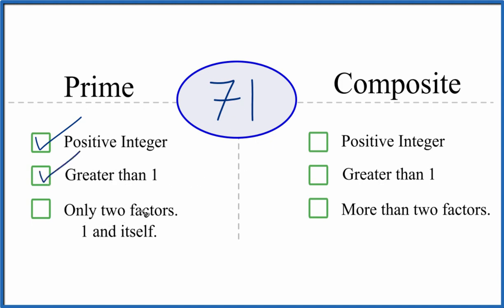And then does it have only two factors, one and itself? 1 and 71. So 1 times 71, that would equal 71. Those are two factors. But there aren't any other numbers that will divide evenly into 71. These are the only two factors.